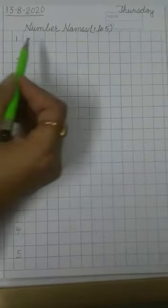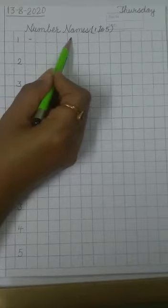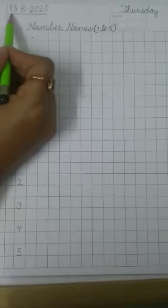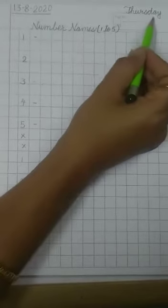In today's class we will revise number names from 1 to 5. So let's begin. First we will write the date on the top. Today's date is 13th August 2020 and the day is Thursday.